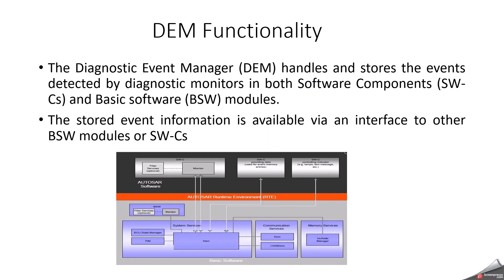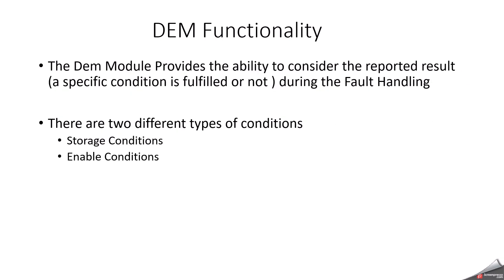For more clarity and debugging purposes, we always need environmental conditions and freeze frame data — this is specifically needed for debugging. Every DEM event will be configured or associated with a DTC, called a Diagnostic Trouble Code, which is an external ID for the event. Whenever a garage technician wants to debug or understand the failure, they can use the 0x19 service to read the reported DTC. The DEM model provides the ability to consider the reported result during fault handling.